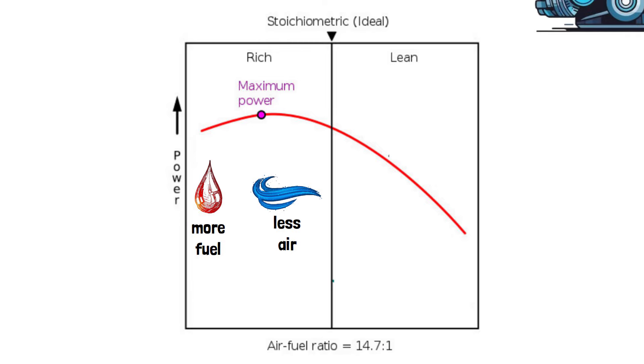This means that the ratio of air to fuel is lower than the ideal stoichiometric ratio, which is typically around 14.7 to 1 for gasoline engines.